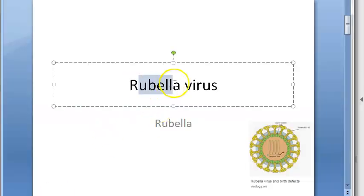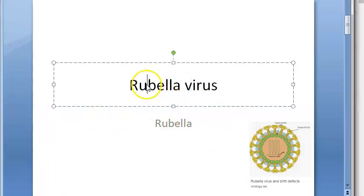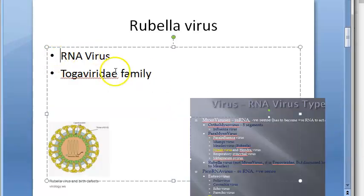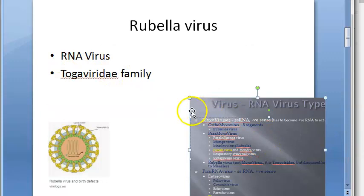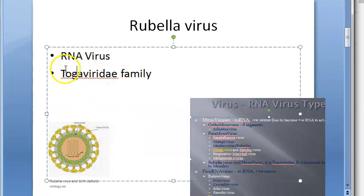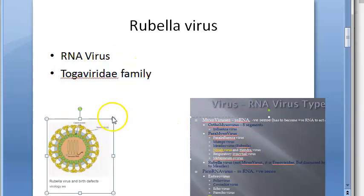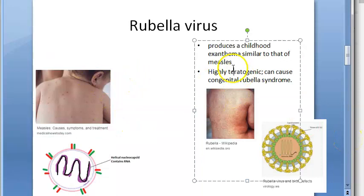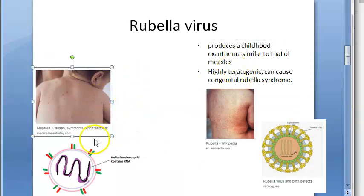In this video we want to look at Congenital Rubella Syndrome. It is caused by the rubella virus, which is an RNA virus. In the classification, it belongs to Togaviridae — it's a separate family altogether. It causes very similar rashes to measles virus.